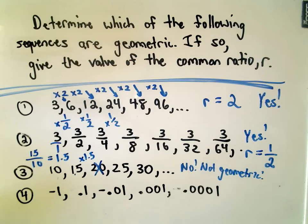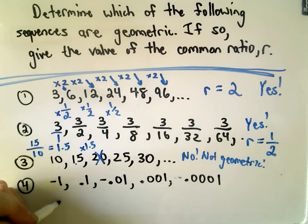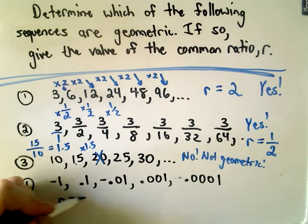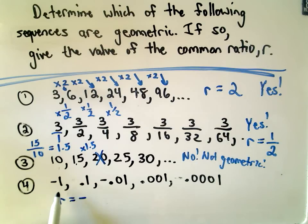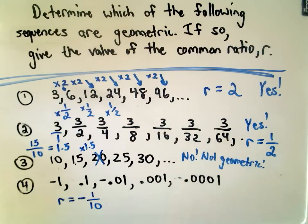The last one may be a little bit trickier. If you have negative 1 and then you go to the number 0.1, since you're going from a negative to a positive, if it is geometric, the R value, the ratio, is going to have to be negative. If you multiply 1 by 0.1, or equivalently 1 tenth, you will go from negative 1 to the value 0.1.